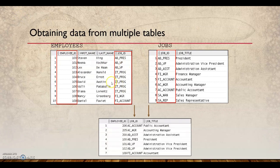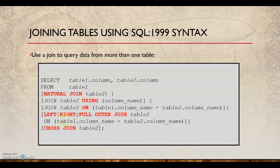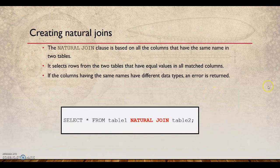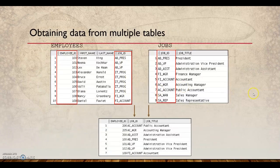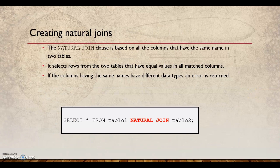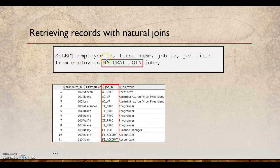For example, you have employees and jobs — the job ID is the common column. You use job ID to retrieve all the details: employee ID, job ID, and job title. Job title is not present in the employee table; it is in the jobs table. The link is the job ID and you use that link to retrieve the data. Natural join is based on all columns that have the same name and same data type in both tables.